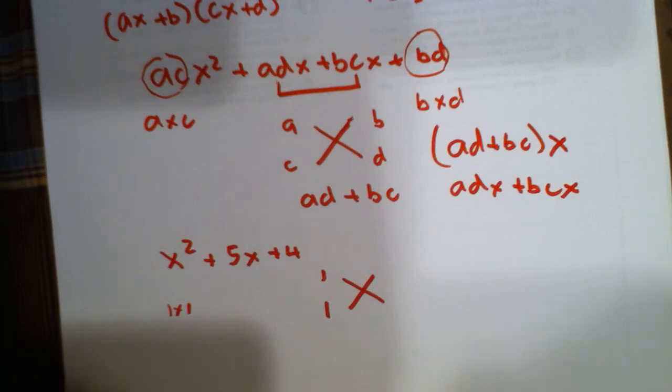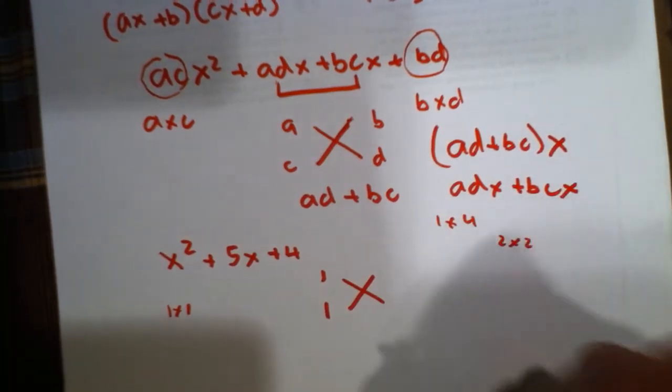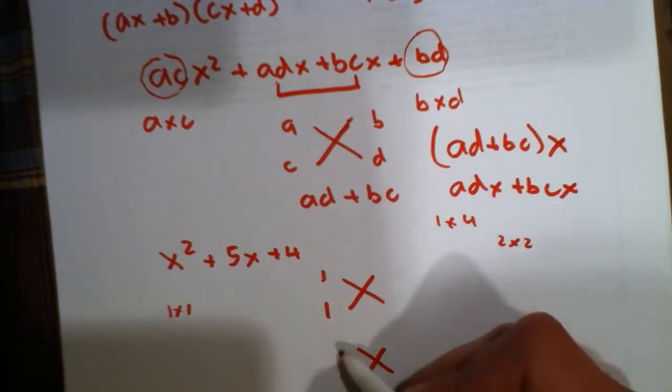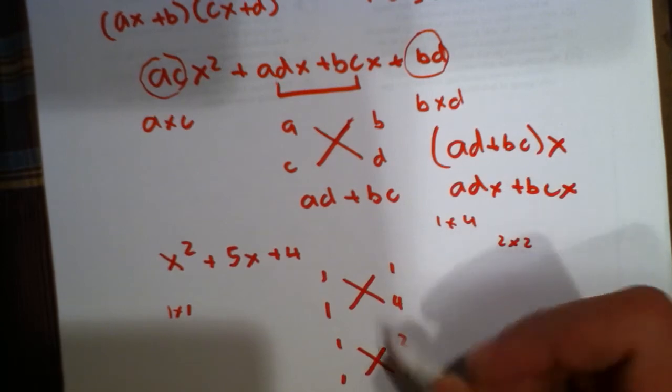Now, there are several ways to get a 4. You can either do 1 times 4 or 2 times 2. So, let's make two crosses to represent both of these possibilities. So, we have 1 times 4 and 2 times 2.